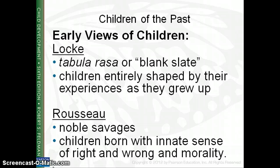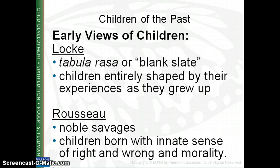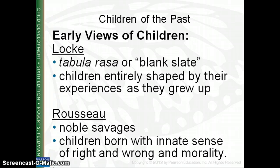When we get to Chapter 2, we will talk about many different theories and theorists, but for now we'll just talk about two. John Locke, who lived from 1632 to 1704, felt that children were tabula rasa — blank slates, which is Latin for blank slates. He felt that children come into the world without any specific characteristics or personalities, and are entirely shaped by their experiences as they grow up. Jean-Jacques Rousseau, who lived from 1712 to 1778, said children are noble savages — born with an innate sense of knowing right from wrong morally.